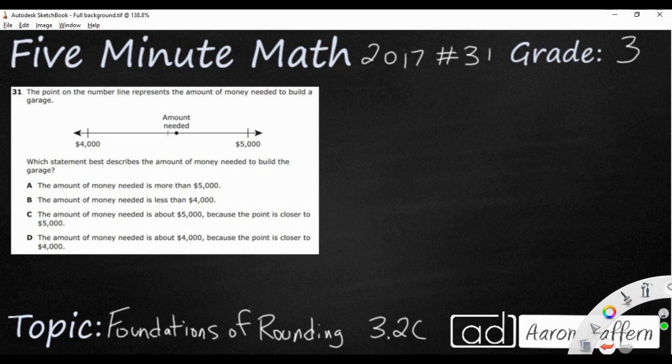Let me read this problem. It says the point on the number line represents the amount of money needed to build a garage. All we have here is just this amount needed right here, and it's on a very bare number line. There's not much there.